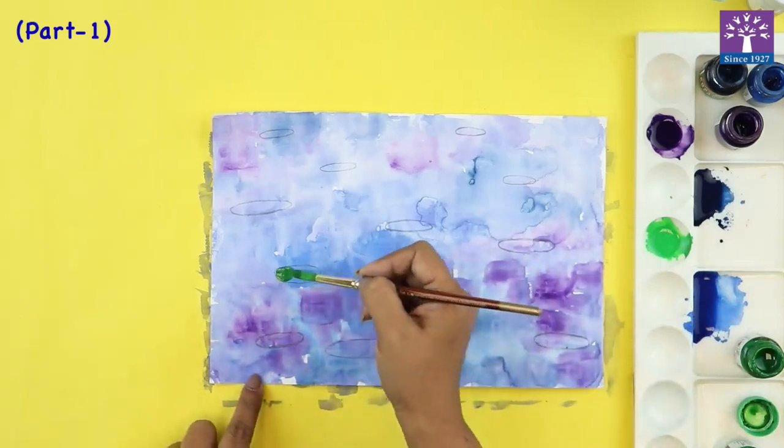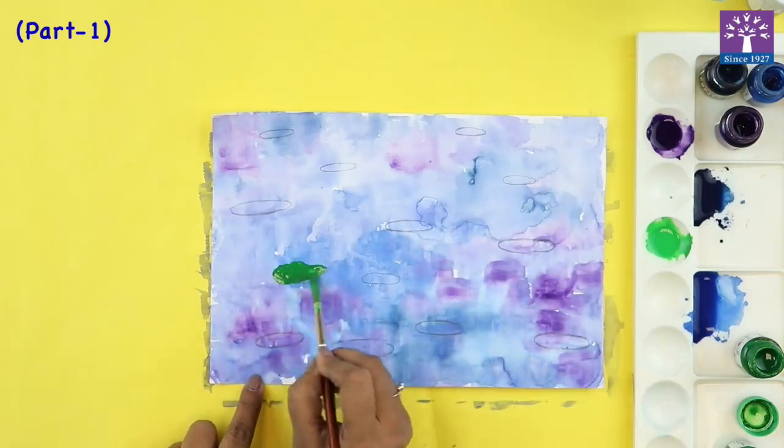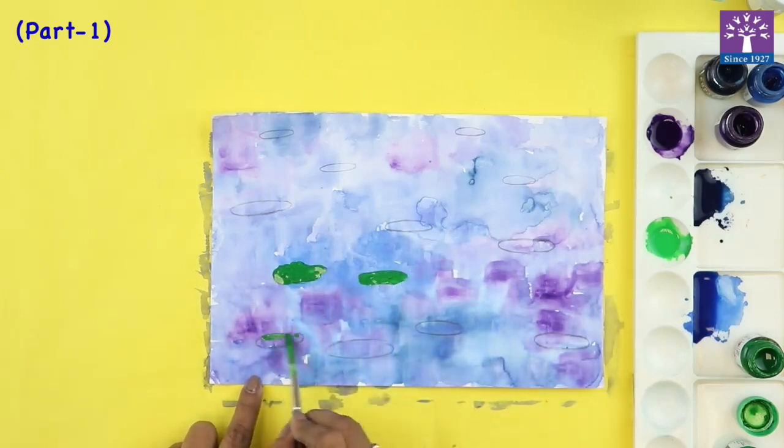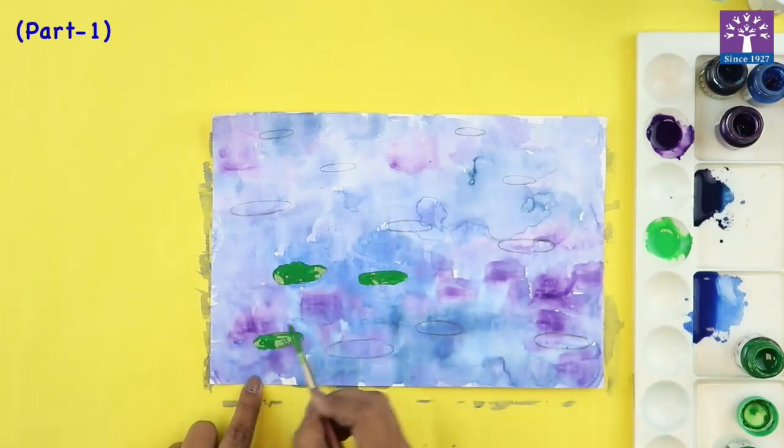Now very slowly I will dab this green paint on the oval shape that we have drawn. Just lightly dab on the leaves.